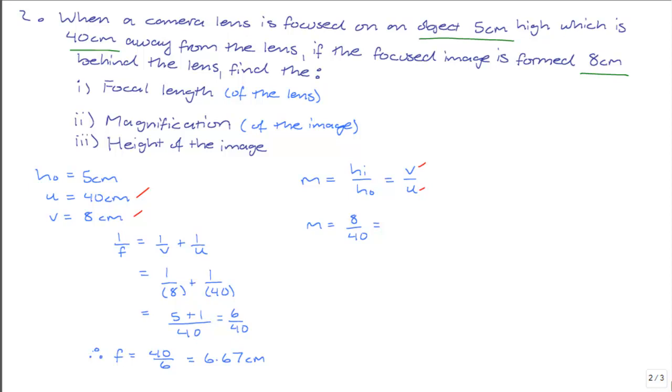Which gives us a magnification of 0.2. So this image is diminished, smaller than the original object. The magnification is equal to 0.2.